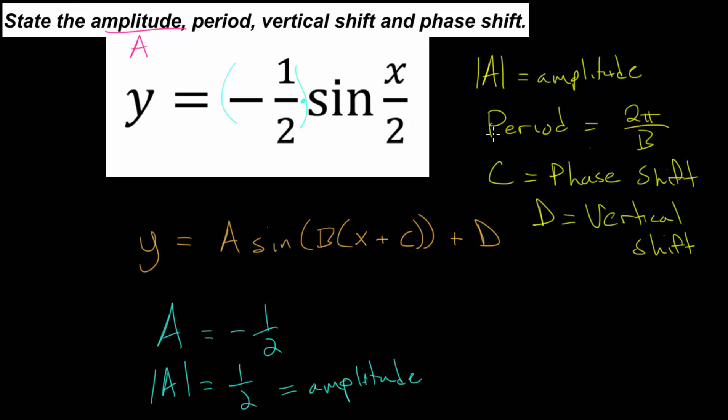Compared to our parent function, that's just y equals the sine of x. This function will be essentially squished by a factor of 1 half. And this negative will actually just cause a reflection.